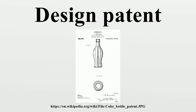U.S. utility patents protect the functionality of a given item, providing the maintenance fees are paid. Utility patents are generally valid for up to 20 years from the date of filing. Design patents cover the ornamental non-functional design of an item and can be invalidated if the design has practical utility. Design patents are valid for 14 years from the date of issue if filed prior to May 13, 2015, or 15 years from the date of issue if filed on or after May 13, 2015. There are no maintenance fees.